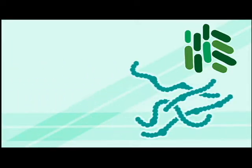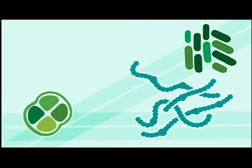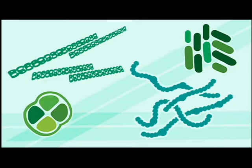Formerly called the blue-green algae, the cyanobacteria is a group that consists of aquatic and photosynthetic prokaryotes. They lack complex organelles and a membrane-bound nucleus.